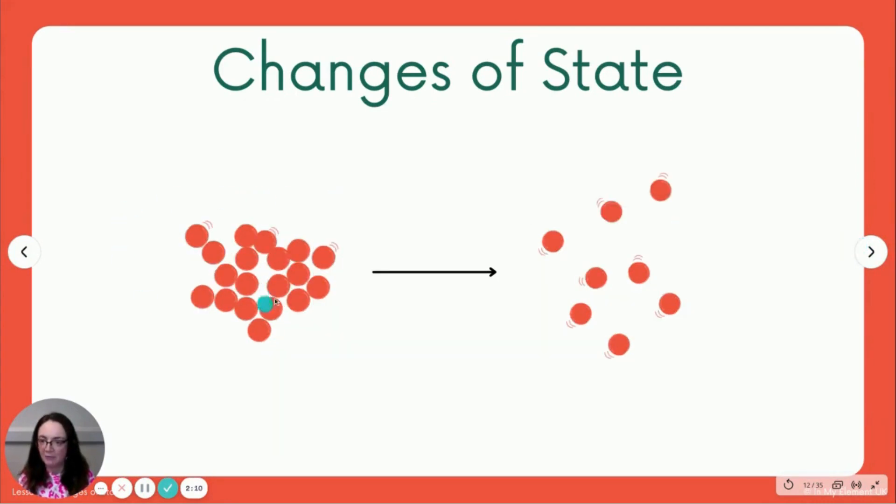Next one, we'll take our liquid that we've got and then we want to turn it into a gas. Now to get that liquid into a gas, we have got to boil it. Once we boil it, we will see evaporation take place.